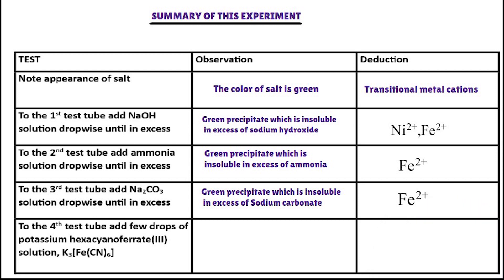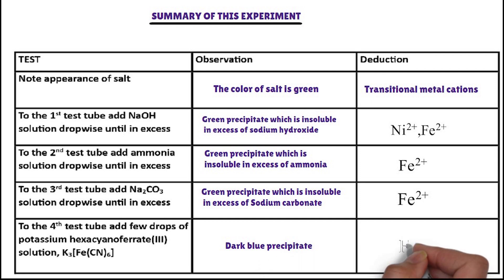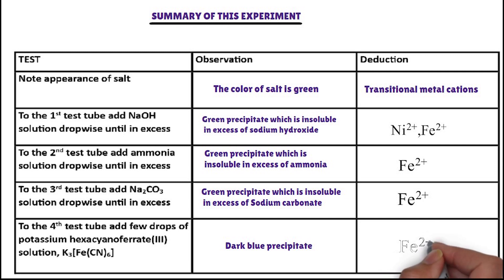Confirmatory test: in the fourth test tube, potassium hexacyanoferrate(III) solution is added. The cation that forms a dark blue precipitate with potassium hexacyanoferrate(III) is iron(II) ion. Iron(II) ion is confirmed. The cation present in the salt is iron(II) ion.